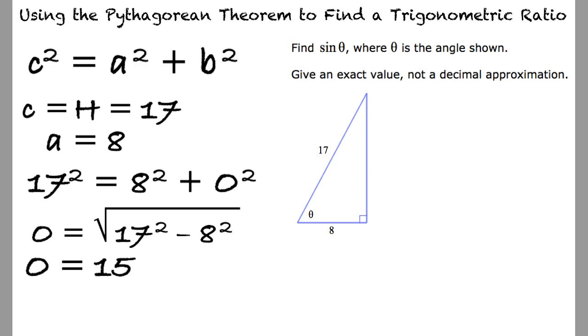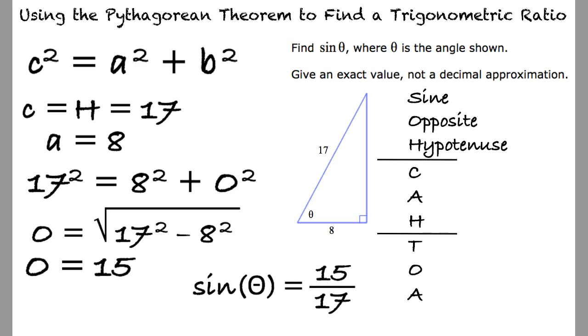Following the mnemonic SOHCAHTOA, we can identify that the sine of theta is equal to the length of the opposite side over the hypotenuse. Substituting these values in yields sine of theta equals 15 over 17.